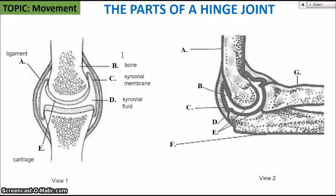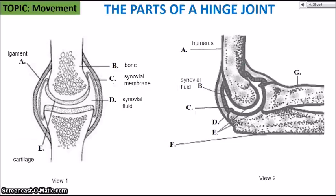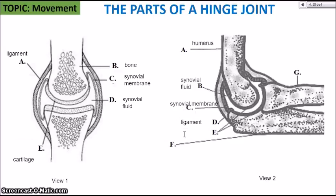Looking at view two: A is pointing at the bone. If this is the elbow joint, A would be the humerus — the upper arm bone. B is pointing at the synovial fluid — that little space represents where the fluid would be to help lubricate the joint. C is pointing at the synovial membrane, which produces the fluid. D is the ligament, connecting bone to bone. E is the cartilage — the two discs of cartilage shown there.